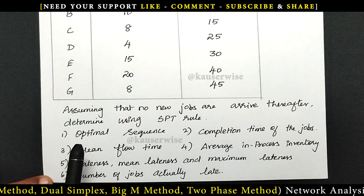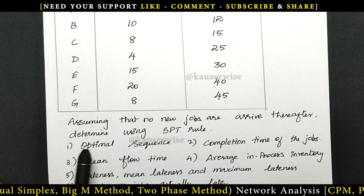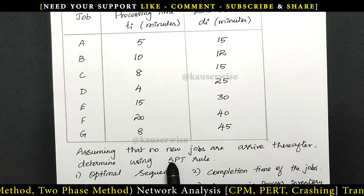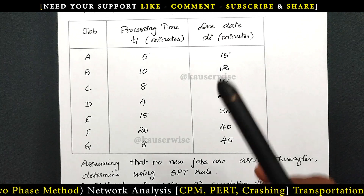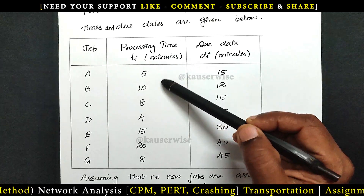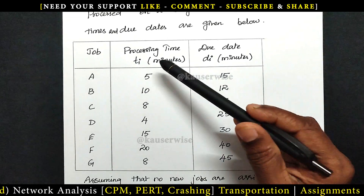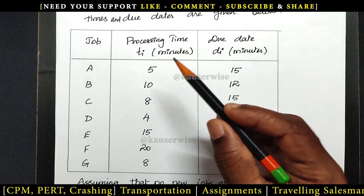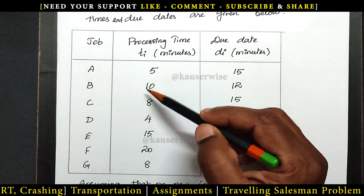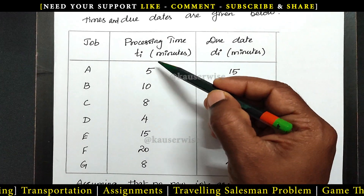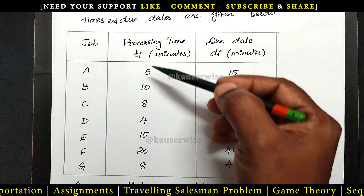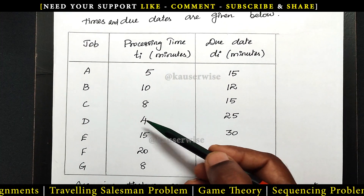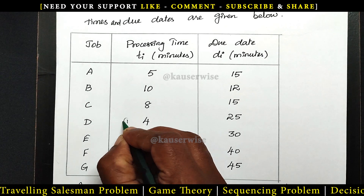The 1st one is optimum sequence. We are going to find out the optimal sequence according to shortest processing time. For that, we need to consider processing time. We have processing time for 7 different jobs, and we have to select the minimum duration job first. The minimum duration is 4, so we can assign this job first.